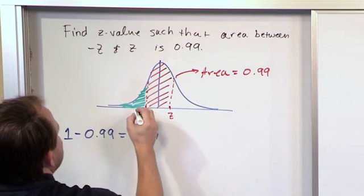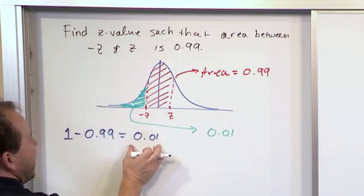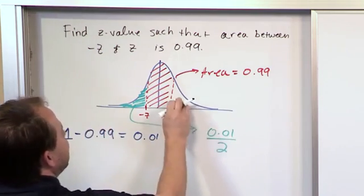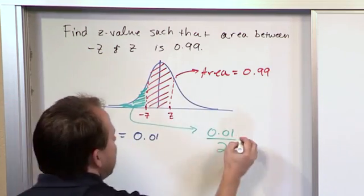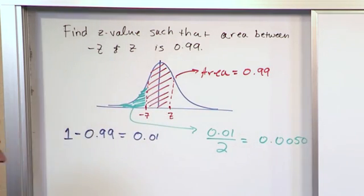Well, this area should be 0.01, which is what I just calculated here, divided by 2 because these two areas should be the same. And so when I get that, I'll look up and I'll get 0.0050. So what we have learned.